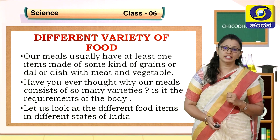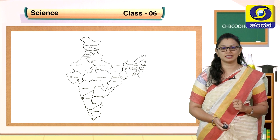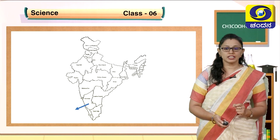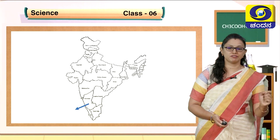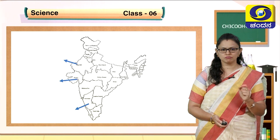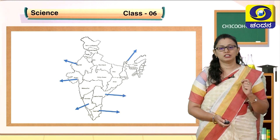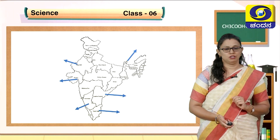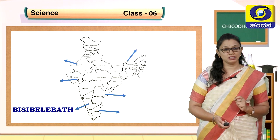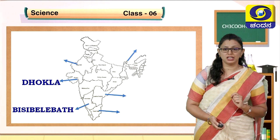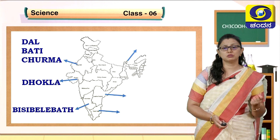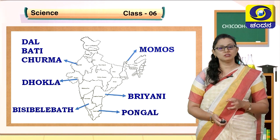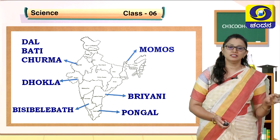Let us look at the different food items from different states of India. You are seeing an outline of India with the states. I am highlighting some states and you have to think about the food items popular there. Karnataka — Bisi Bele Bath or South Indian meals. Gujarat — Dhokla. Rajasthan — Dal Baati Churma. Sikkim — Momos. Andhra Pradesh — Biryani. Tamil Nadu — Pongal. These are the different popular food items prepared in each particular state.